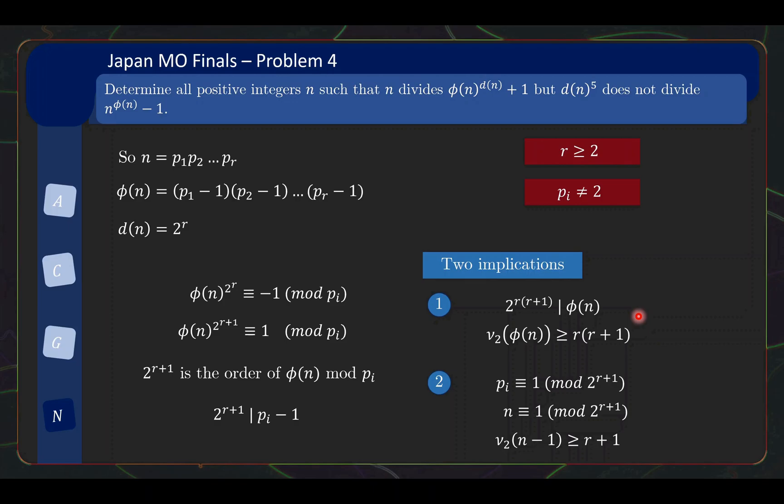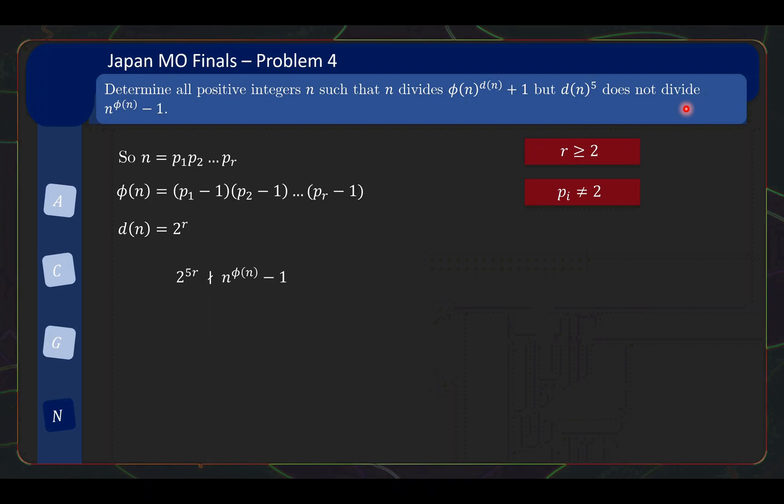Let's keep this at the back of our mind for now and turn to the second condition here. So the second condition is talking about d(n) to the power of 5 does not divide this, right? And what's d(n)? d(n) is a power of 2. So we are saying this power of 2 does not divide this. And at this juncture, everything, all the alarm bells in your head should go off, because the previous slide is about powers of 2 dividing stuff. This slide is about power of 2 not dividing stuff. So it sounds that the two put together will give you a very strong conclusion.